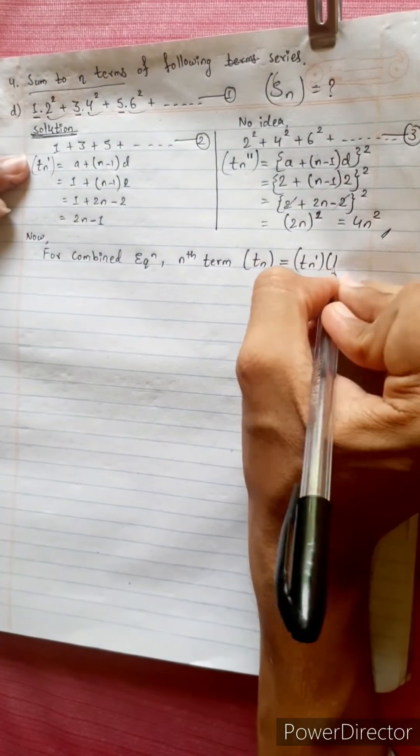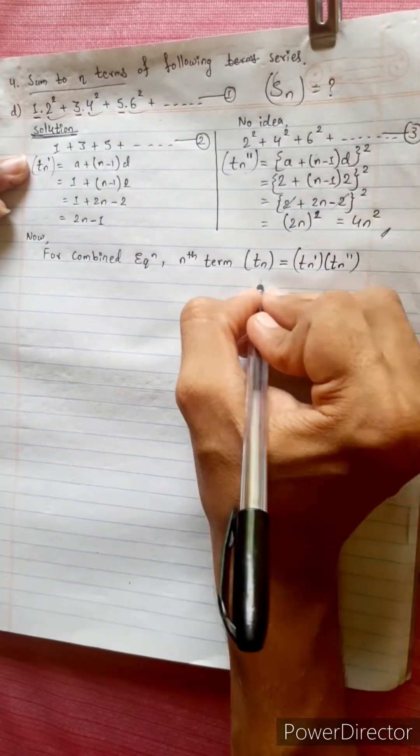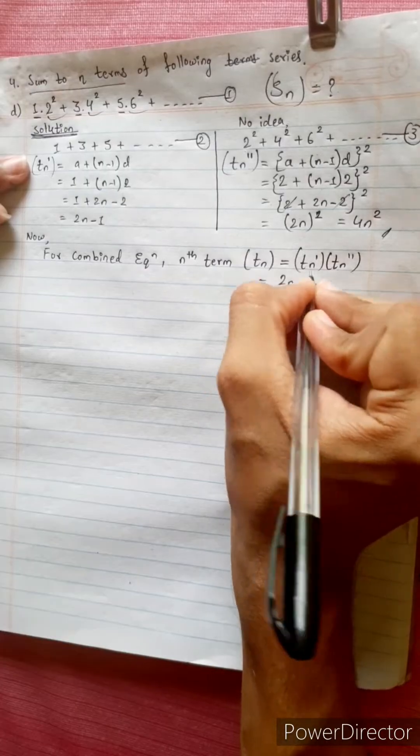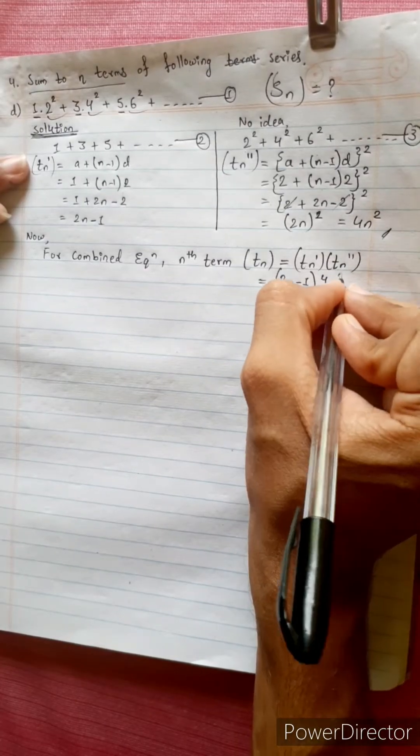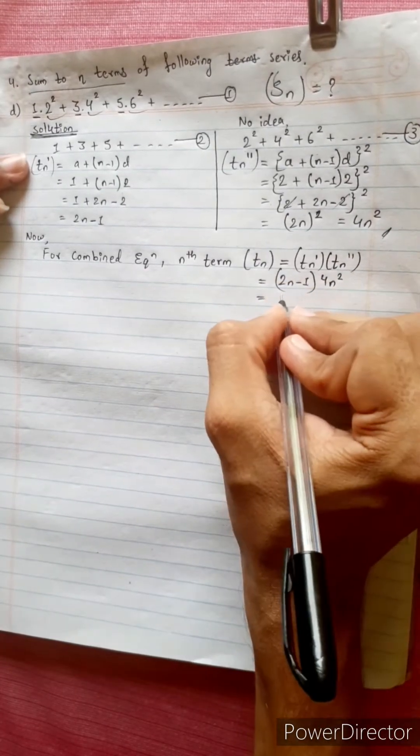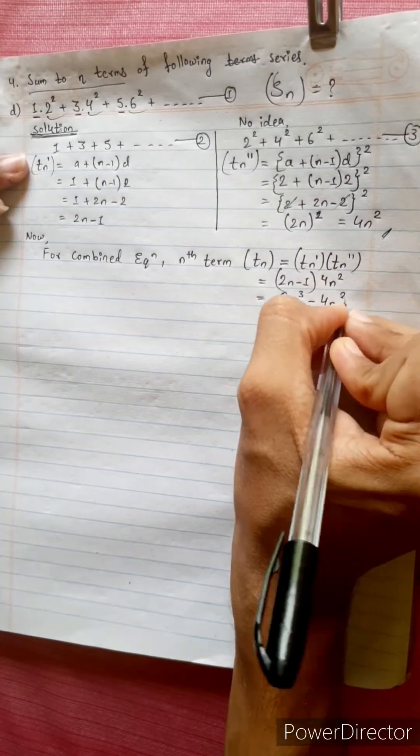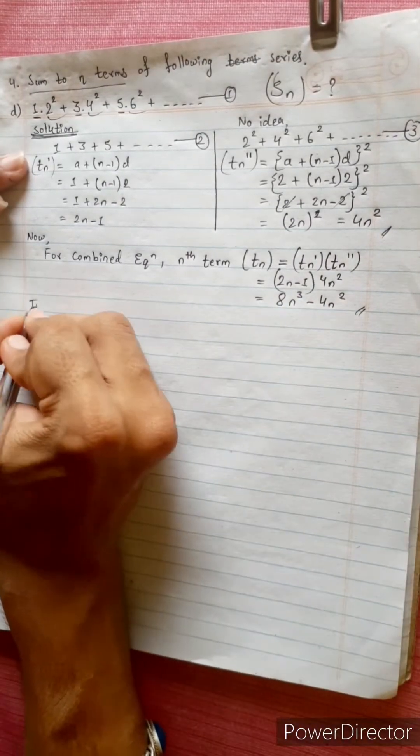Tn dash into Tn double dash equals to 2n minus 1 times 4n square, equals to 8n cube minus 4n square. Then finally...